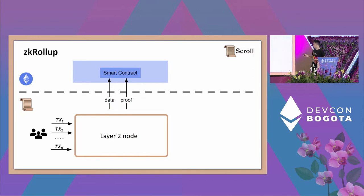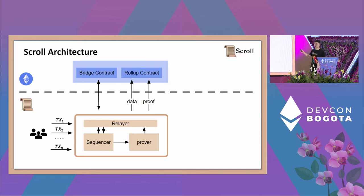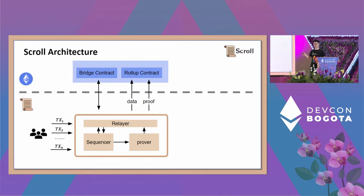Intuitively, the architecture of Scroll looks like this. You need a sequencer to sequence transactions after receiving them and generate layer two blocks. You also need a relayer to relay messages between layer one and layer two — for example, deposits from layer one through the bridge contract. The relayer needs to relay this message from layer one to layer two. After the sequencer sequences transactions and gets layer two blocks, it sends them to the prover, which runs a zero-knowledge proof algorithm and generates the proof. The relayer then submits the proof and necessary data.